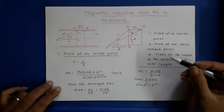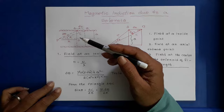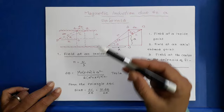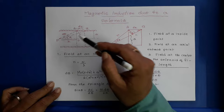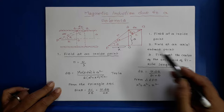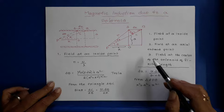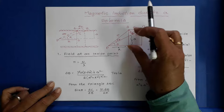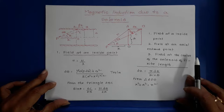Today in this class I am going to explain how to find magnetic induction due to a solenoid. A solenoid is nothing but a long coil. I am going to find magnetic induction due to the solenoid in three cases: field at any inside point, field at an axial end point, and field at the center of a solenoid of finite length.